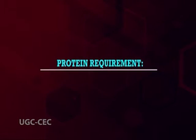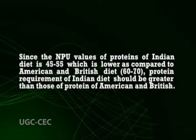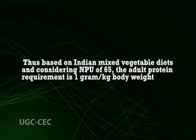Next, protein requirement. Since the nutritive value of dietary proteins varies widely, protein requirement is expressed in terms of a reference protein assumed to possess a net protein utilization of 100 and to be fully digested and utilized. Protein requirement from dietary protein is calculated as: reference protein requirement multiplied by 100, divided by the net protein utilization of dietary proteins. Since the net protein utilization values of proteins in the Indian diet are 45 to 55 — lower compared to American and British diets at 60 to 70 — protein requirements of the Indian diet should be greater. Thus, based on Indian mixed vegetable diets and considering a net protein utilization of 65, the adult protein requirement is 1 gram per kg body weight.